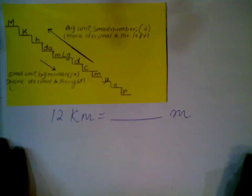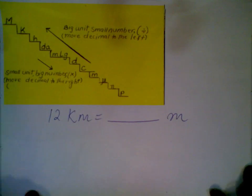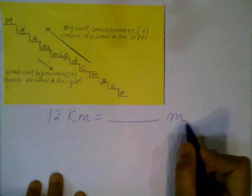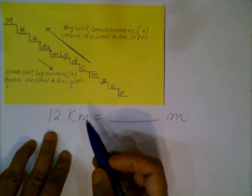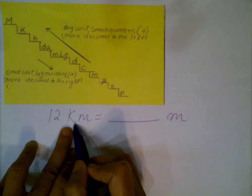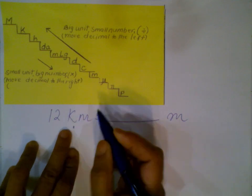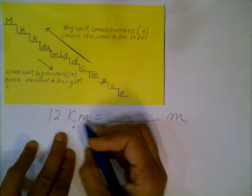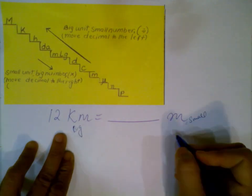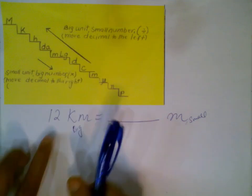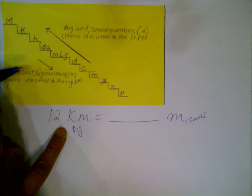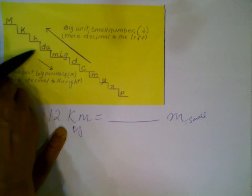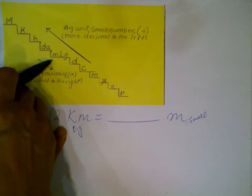Let's do a conversion: 12 kilometers to meters. Our starting unit is kilo — a big unit — and we want meters, a smaller unit. On the stair step, kilo is here and meter is here, so we're going downward. That means we move the decimal to the right. From kilo to meter is three places.